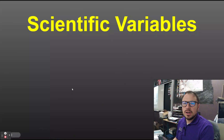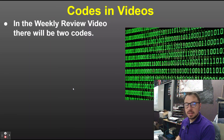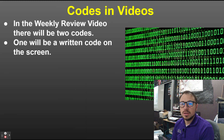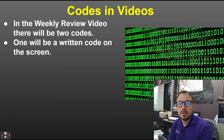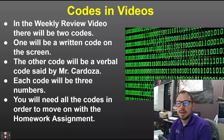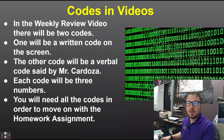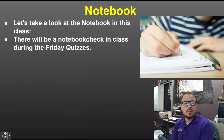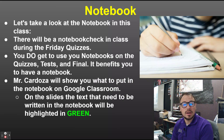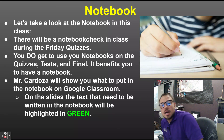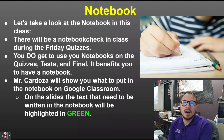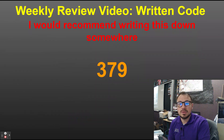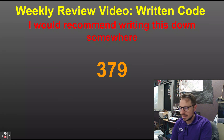This is the video on scientific variables. In these videos there will be two codes: one written code that will show up on the screen, and one verbal code said by myself. Each code will be three numbers and you need all the codes in order to move on with any assignment. When looking at slides with green, you can bullet point or summarize. Everything else provides a complete picture with additional information. This is the weekly review written code — write this down somewhere.